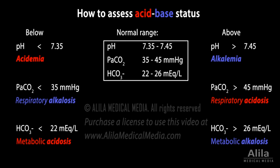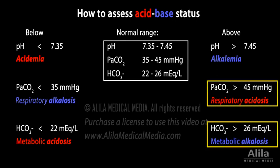When PaCO2 and bicarbonate values indicate opposing processes, one of them must be the result of compensation. The value that is consistent with pH is the primary process, and the one that is inconsistent with pH is the compensation.